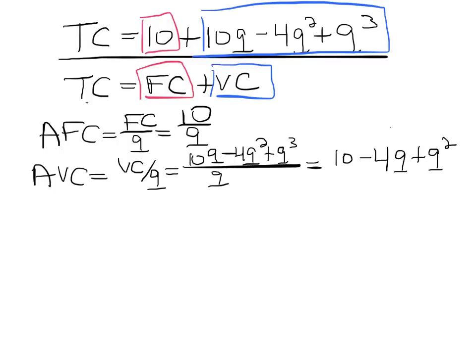And then the average total costs are simply going to be the average variable costs plus the average fixed costs. So in this case, it's the whole equation divided by q. So this would be 10 over q plus the average variable costs, which is 10 minus 4q plus q square.